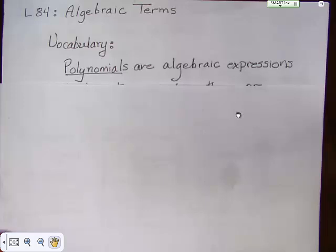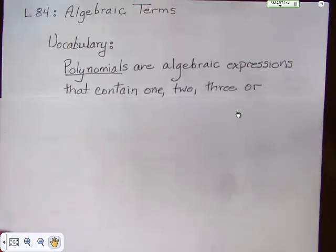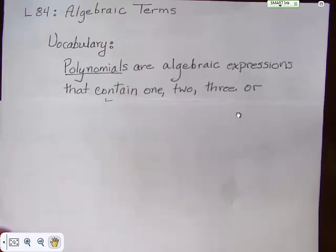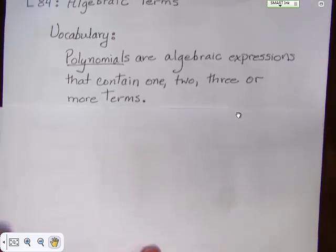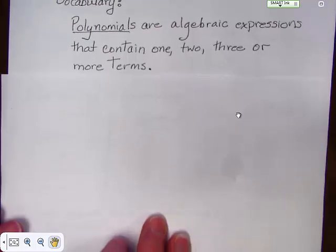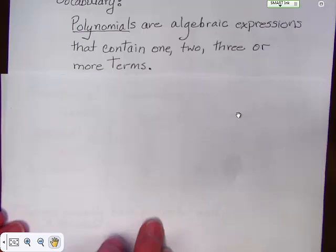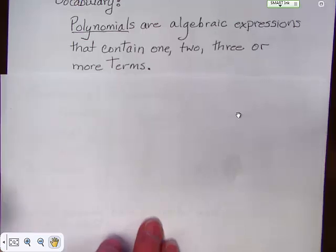Algebraic terms are polynomials that have variables with them most of the time. We call them polynomials, and normally they contain one, two, or three or more terms. That term is something like 4x or 2x squared plus 2. Those are two terms.